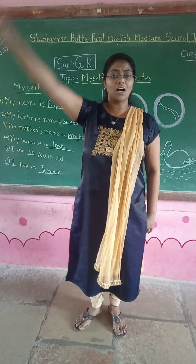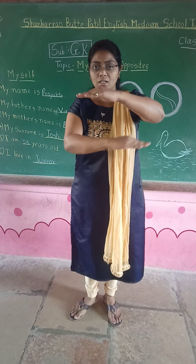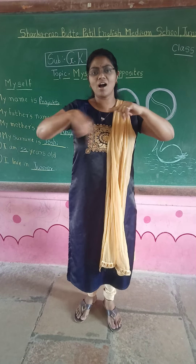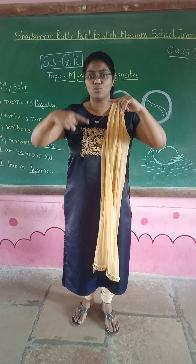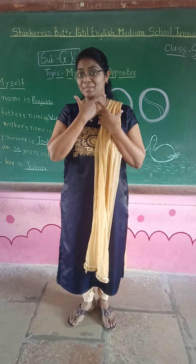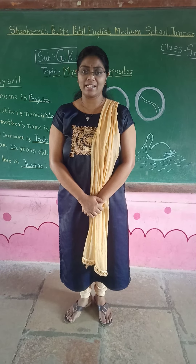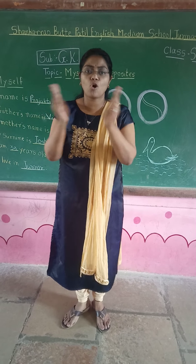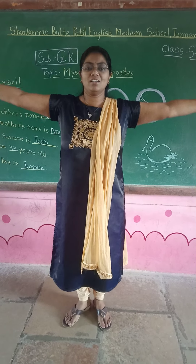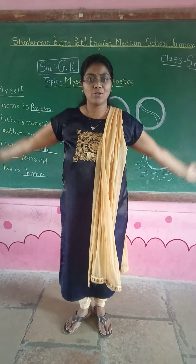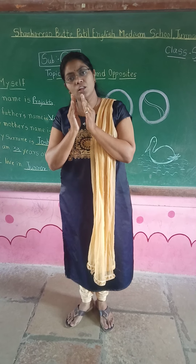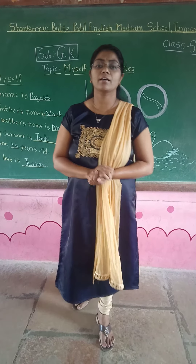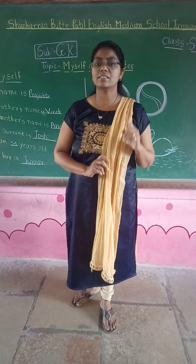Up. Down. Up. Down. Under. Over. Under. Over. Fast. Slow. Happy. Sad. Longer. Shorter. Longer. Shorter. Big. Small. Okay students, so all these actions and words are opposites to each other. Once again I will revise these words from your book.